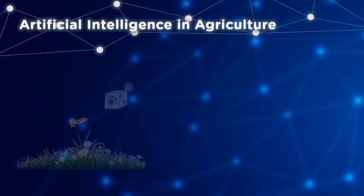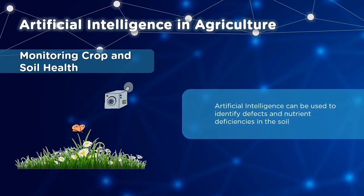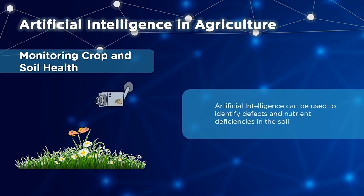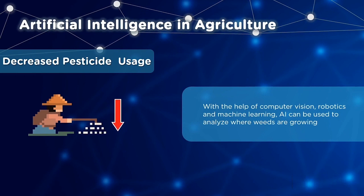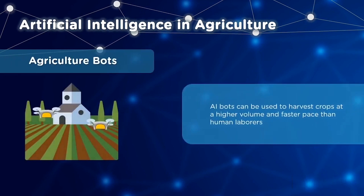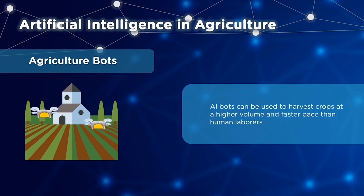In agriculture, AI helps monitor crop and soil health by identifying defects and nutrient deficiencies through image analysis — detecting soil defects, plant pests, and diseases. AI also decreases pesticide usage using computer vision, robotics, and machine learning to determine where weeds are grown, so herbicides can be sprayed only where needed. Agriculture bots can reduce human labor by harvesting crops at a faster rate and higher volume. In gaming, AI handles labor costs by generating levels, maps, textures, weapons, and characters, and creates smart human-like NPCs. It can also predict human behavior to improve game design and testing.